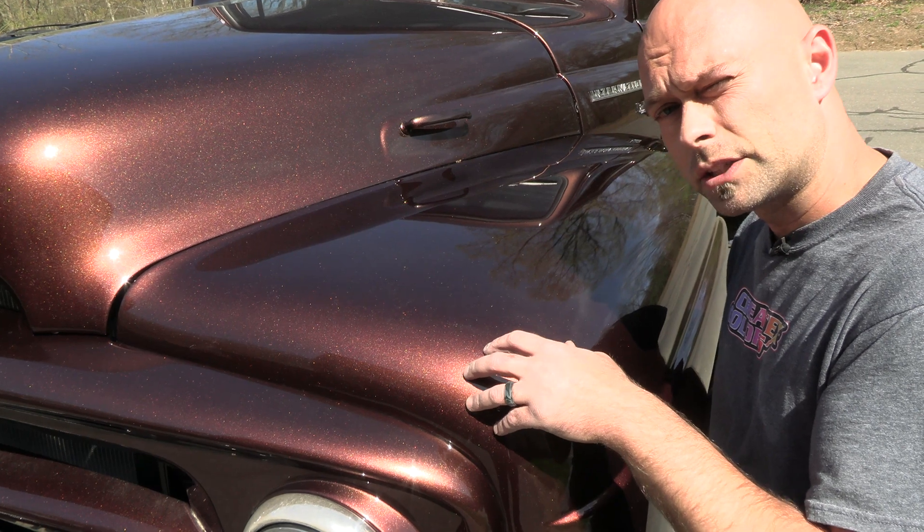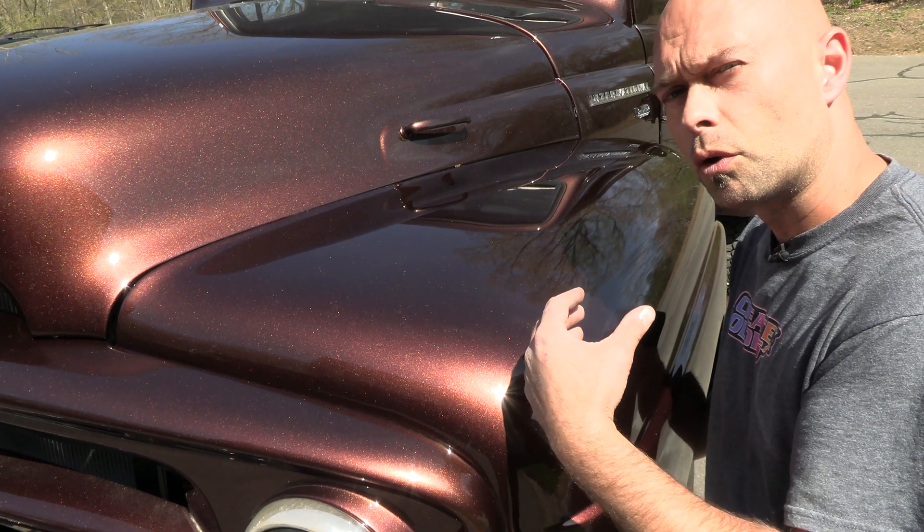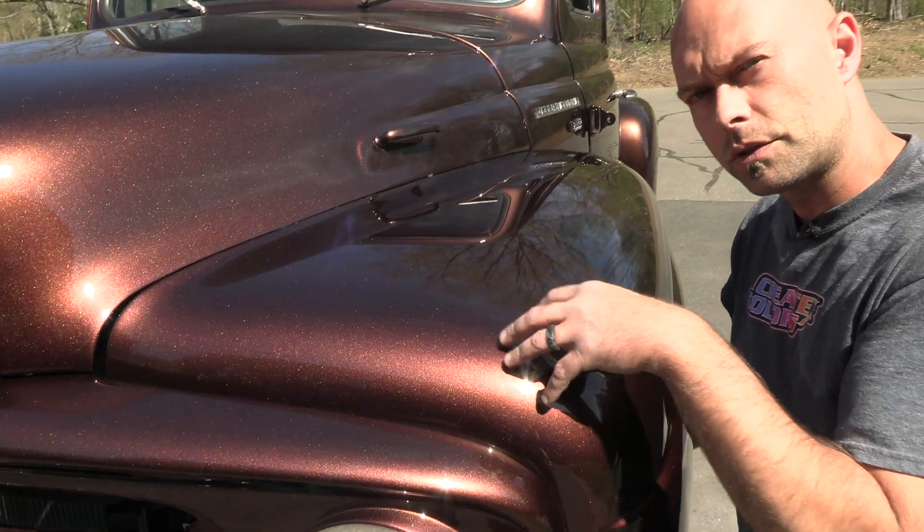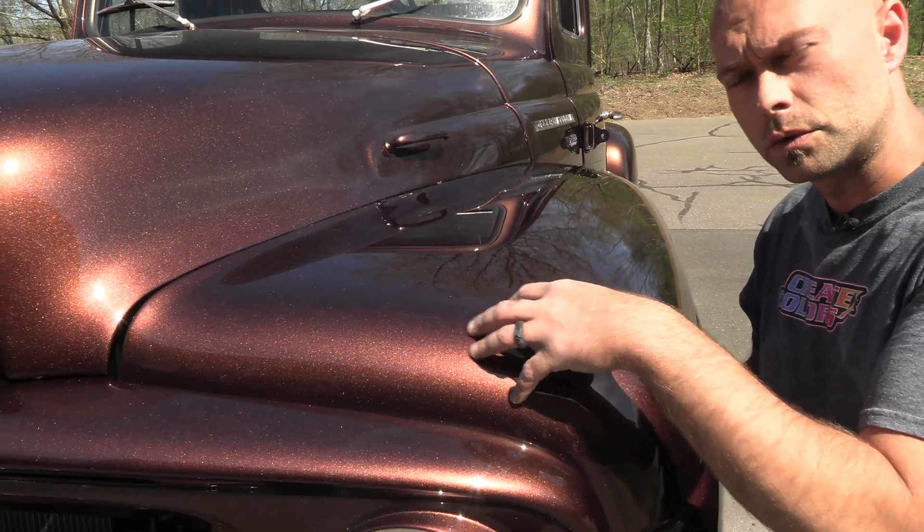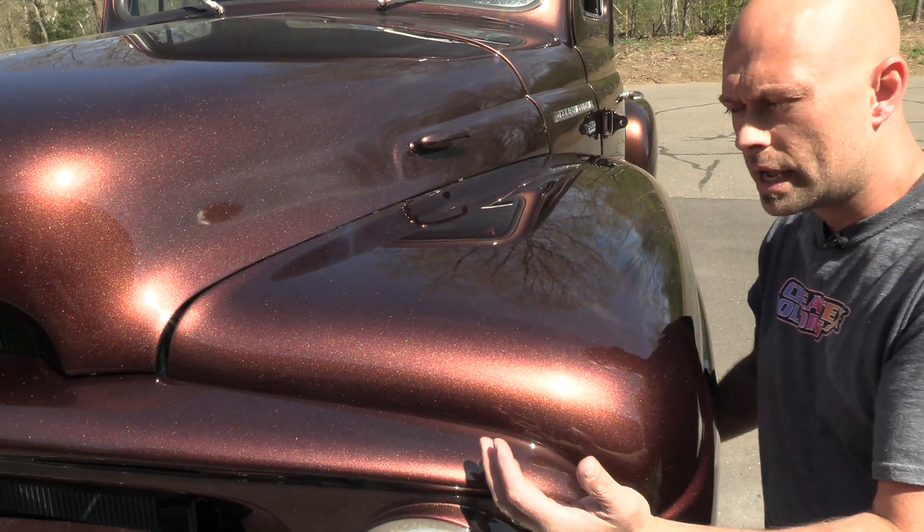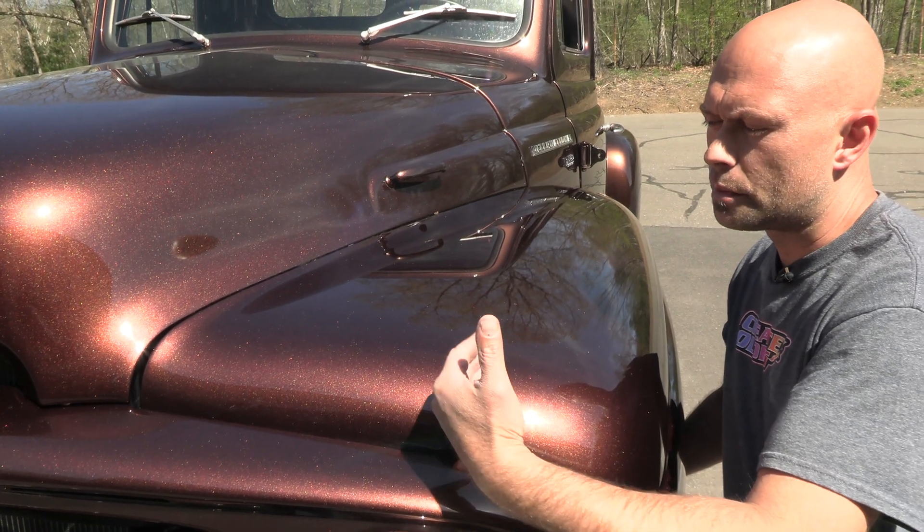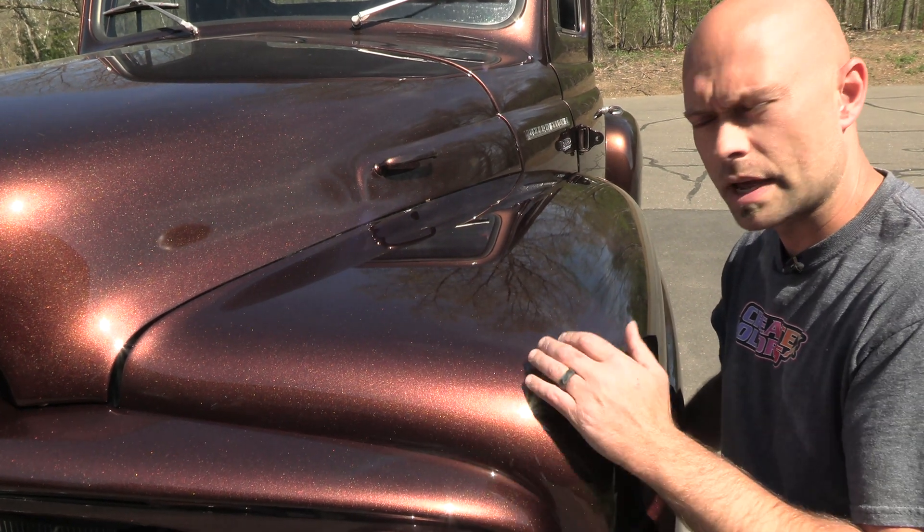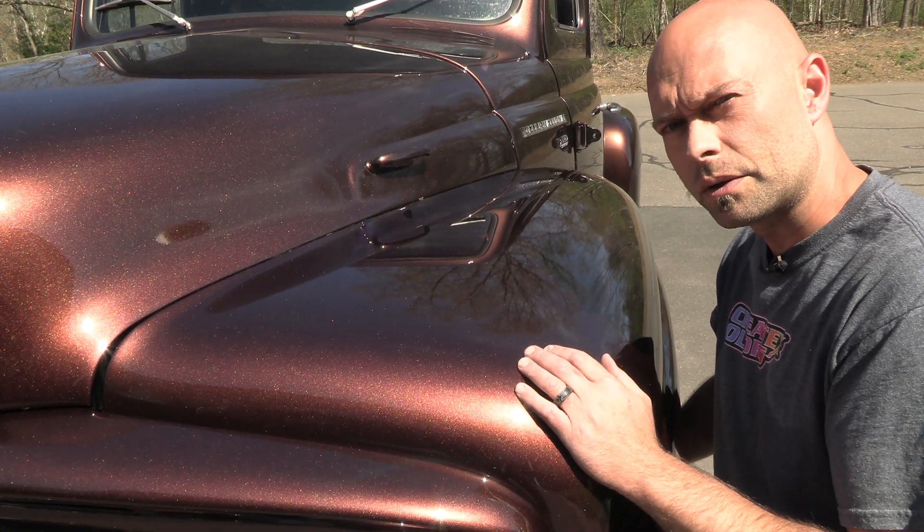I'm also going to take that color and show you how to make a candy pearl midcoat. So we'll take that color and extend it, thin it out a little bit with the 4050 to increase the transparency of the color. I'll show you how a different underlying ground coat is going to affect the color and how you can lighten it and darken it just by doing that. So stick around, we'll show you how to do it.